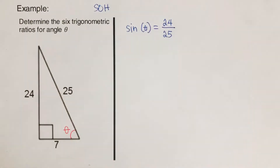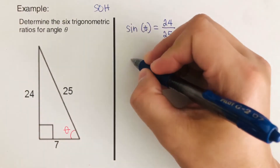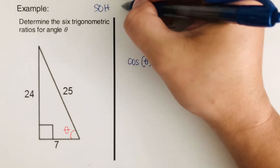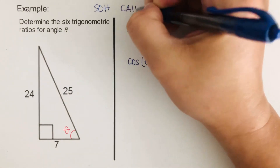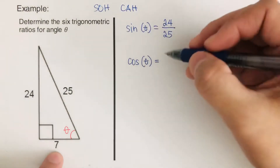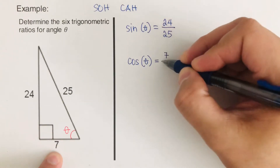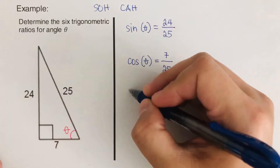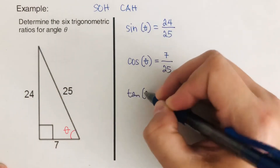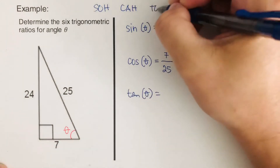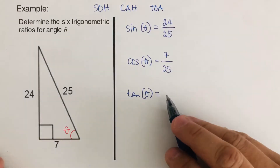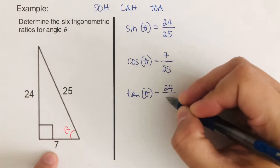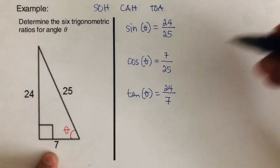If I want cosine theta, remember cosine would be CAH, so that would be adjacent which is 7 over the hypotenuse which is 25. And if I want tangent theta, that is TOA, so that would be opposite which is 24 over adjacent which is 7.